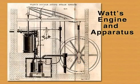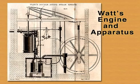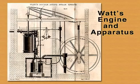Watt's engine was able to push a piston to drive a crankshaft in order to turn a wheel. Thus began the engineering of the first trained locomotive, and thus was altered the course of history.